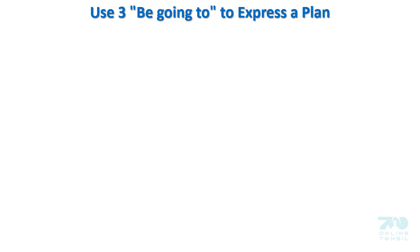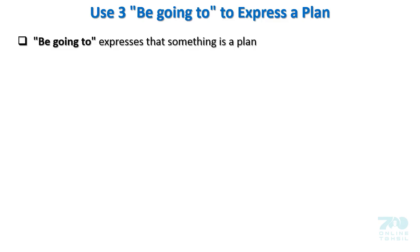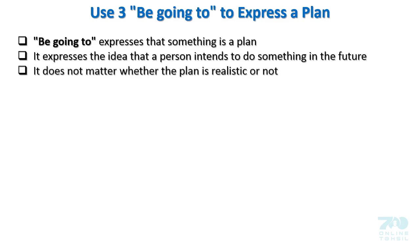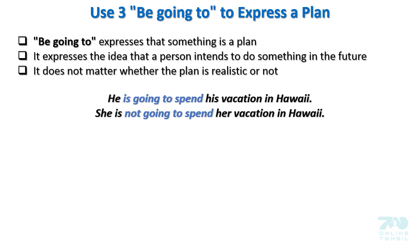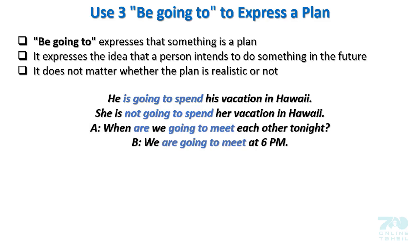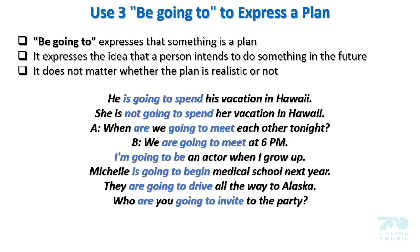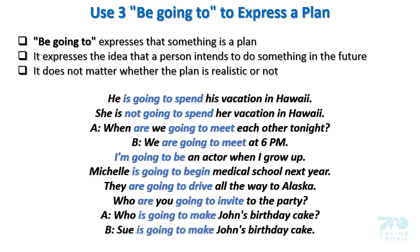Use 3: be going to express a plan. Be going to expresses that something is a plan — it expresses the idea that a person intends to do something in the future. It doesn't matter whether the plan is realistic or not. Examples: 'He is going to spend his vacation in Hawaii.' 'She is not going to spend her vacation in Hawaii.' A: When are you going to meet each other tonight? B: We are going to meet at 6 p.m. 'I am going to be an actor when I grow up.' 'Michelle is going to begin medical school next year.' 'They are going to drive all the way to Alaska.' 'Who are you going to invite to the party?' A: Who is going to make John's birthday cake? B: She is going to make John's birthday cake.